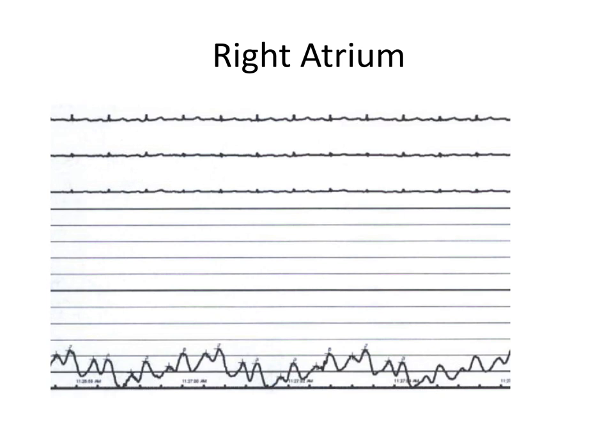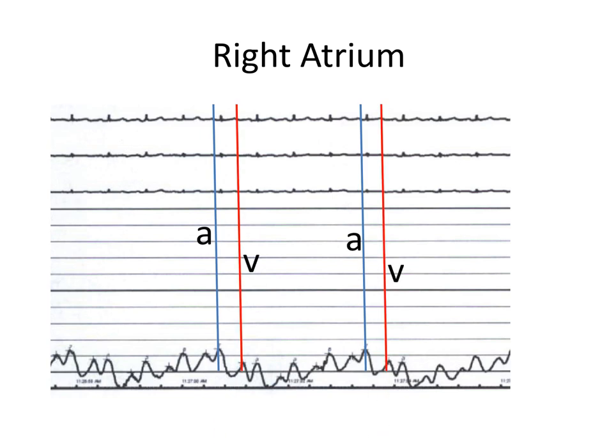Here is a right atrial pressure waveform from an actual patient. There are two aspects of this tracing I want to highlight. First, I want you to appreciate the variation in the waveform with inspiration and expiration. Second, I want to use this example to learn to identify the A and V waves. You want to find a waveform that corresponds to end expiration. Find your P wave and T wave on your rhythm strip and draw a line down to identify your A wave and V wave. The blue line at the P wave identifies the A wave; the red line corresponds to the T wave and identifies the V wave. The A wave pressure is what you will use as your right atrial pressure. When finding end expiratory pressures, you want to identify the waves that are at the peaks.